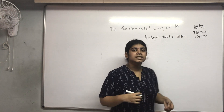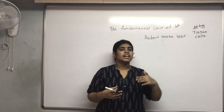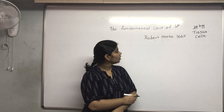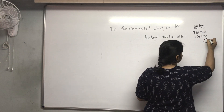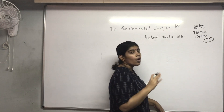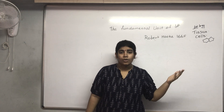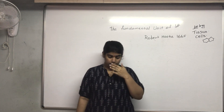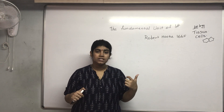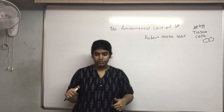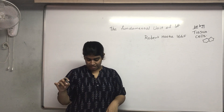Robert Hooke happened to see the bark of a tree inside a magnifying glass, which was a kind of simple microscope at that time. What he observed were the compartments present on the bark. Since bark is a dead organ, the cells were empty — so the first discovered cells were non-living cells.